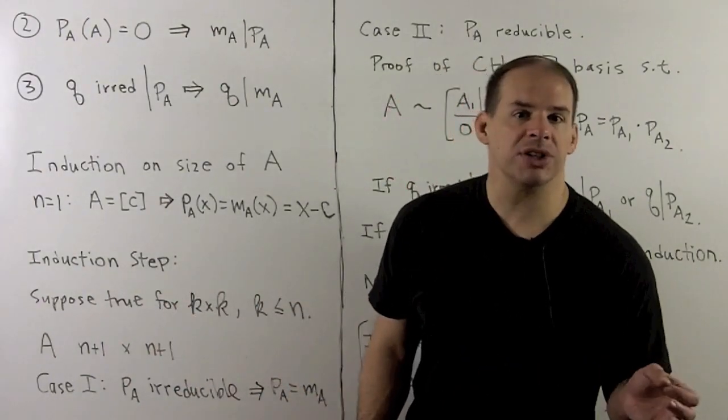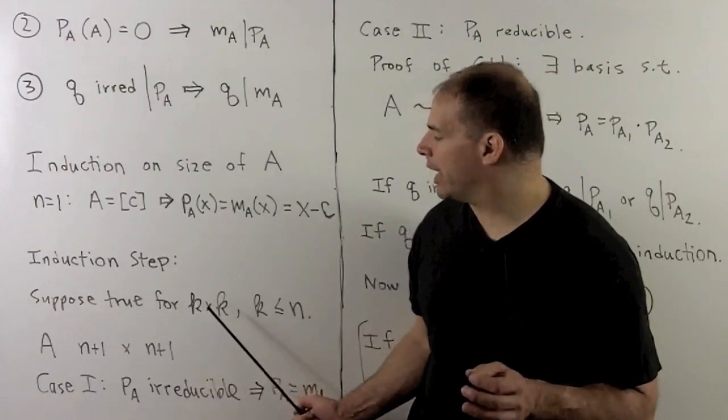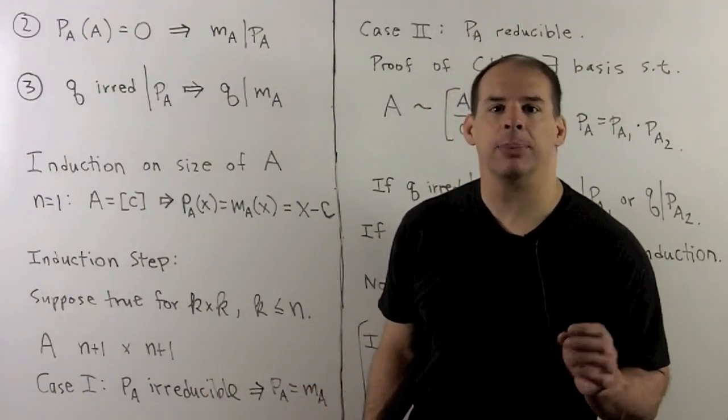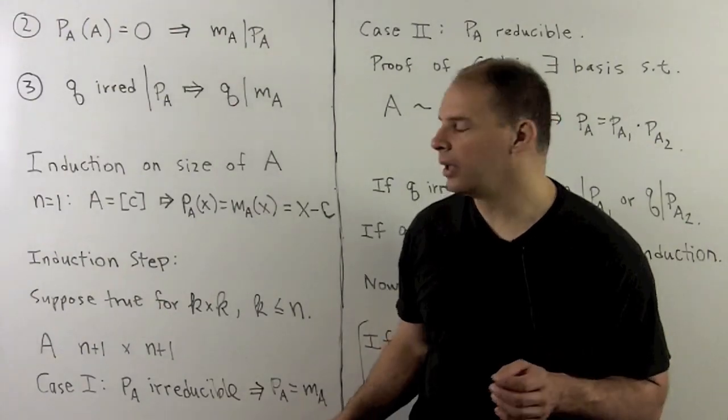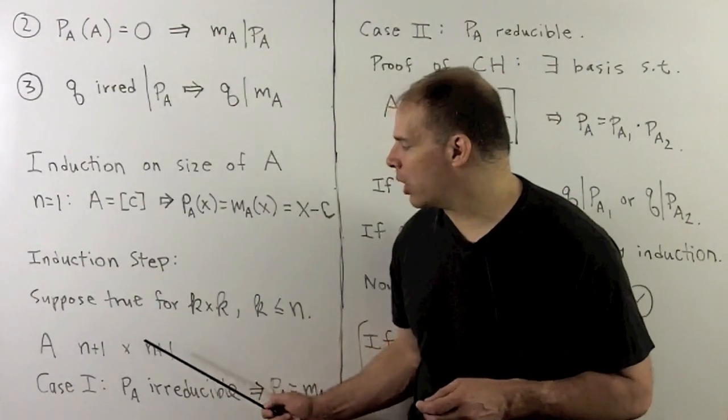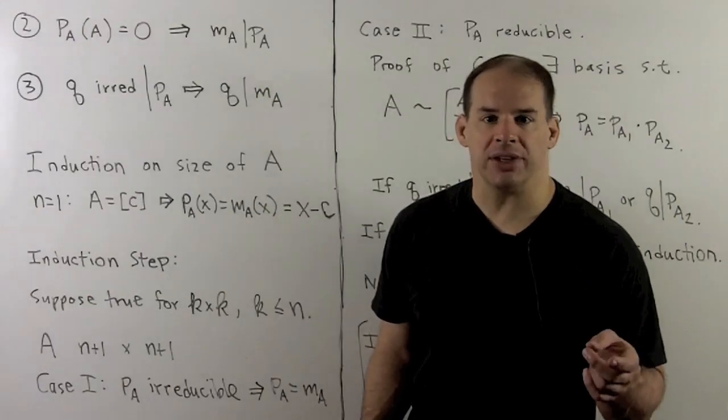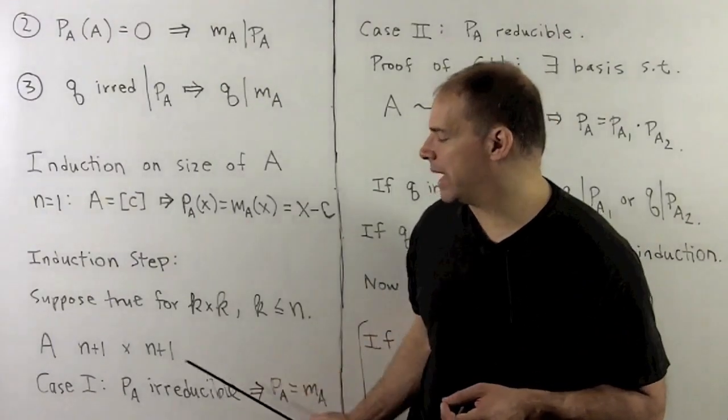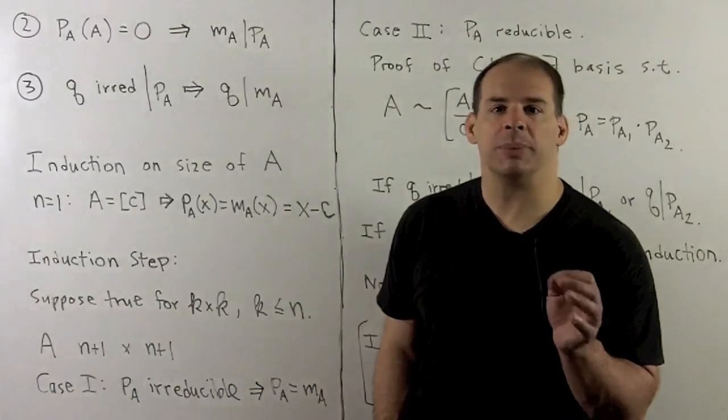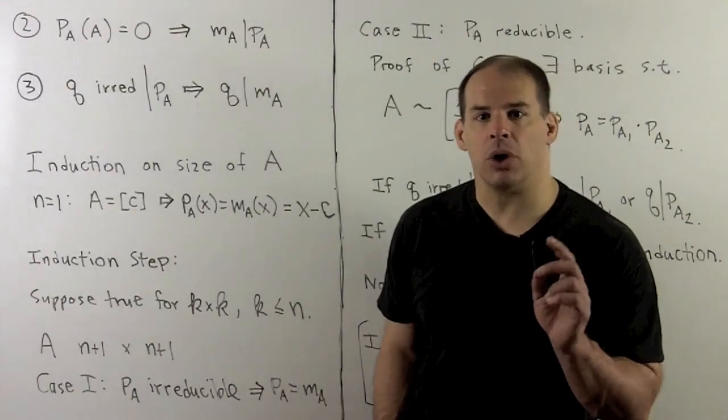Now, for the induction step, we'll assume our result's true if our matrix is of size K by K, where K is less than or equal to N. And I'll assume A is N plus one by N plus one. Here, we have two cases. First, if P_A is irreducible, then it must be equal to M_A, and our result holds.